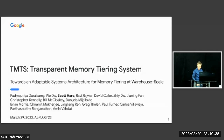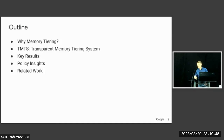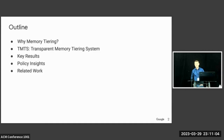Today I'll be introducing TMTS, Google's memory sharing system. Starting with a quick outline of the talk: we'll talk about why we're interested in memory tiering, moving on to what is TMTS and how it's implemented. Then we'll go on to key results and the policy insights we had along the way, and finally our relation to other work.